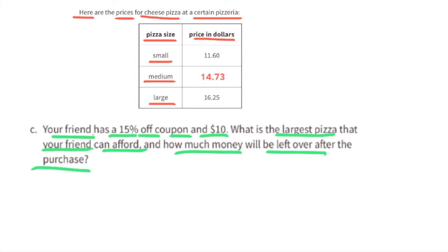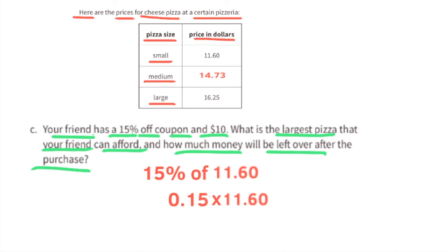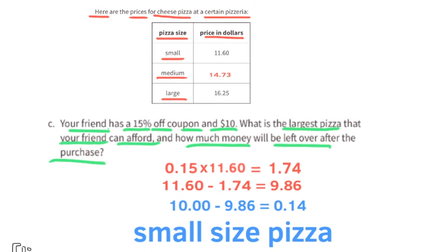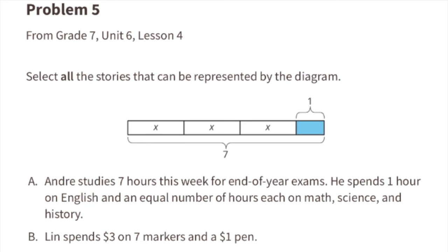Part c: your friend has a 15 percent off coupon and ten dollars. What is the largest pizza they can afford? Taking 15 percent off the smallest pizza at $11.60: 0.15 times $11.60 equals $1.74 savings, so the discounted price is $9.86. Since $10.00 minus $9.86 equals $0.14, the friend can afford the small pizza and would have 14 cents left over.